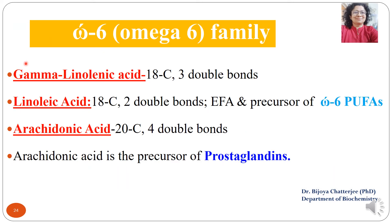The omega-6 fatty acid family includes gamma-linolenic acid (18 carbons, three double bonds) and linoleic acid (18 carbons, two double bonds), which is an essential fatty acid and precursor of other long chain and very long chain polyunsaturated fatty acids of the omega-6 family. These include arachidonic acid, which has 20 carbons and four double bonds. Arachidonic acid is the precursor of prostaglandins, which play several roles in our body.